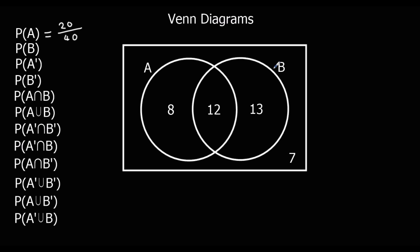How many like bananas? We've got this circle here — 12 and 13 is 25. So we've got 25 people out of 40 that like bananas. P(A') with a little dash after it means the probability that someone doesn't like apples — everything apart from this circle, everything outside the circle. So we've got 20 people out of 40. And the probability someone doesn't like bananas — everything apart from that circle — is 15 out of 40.